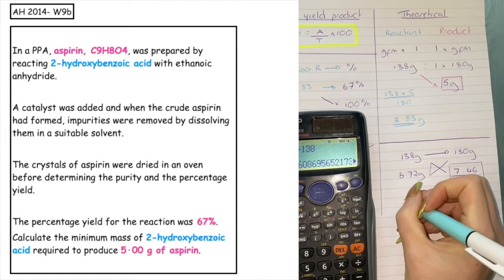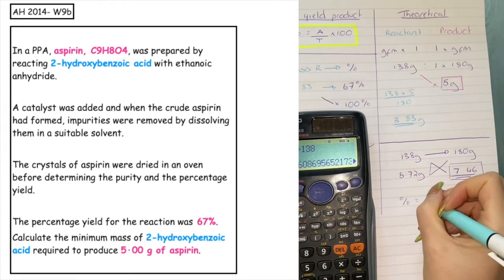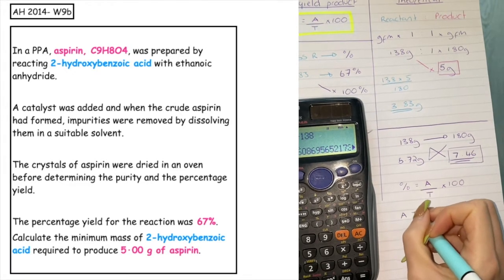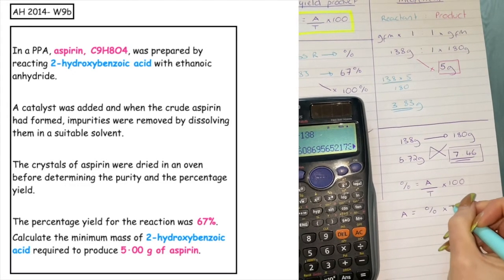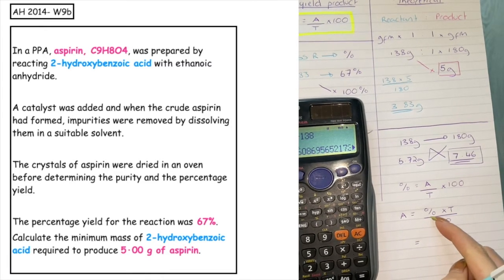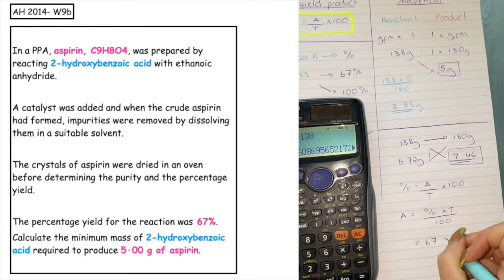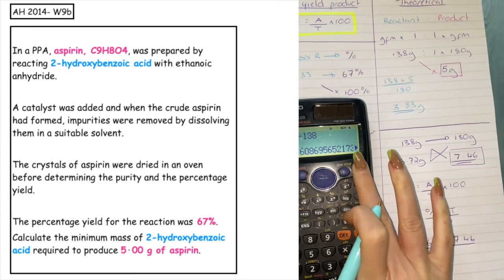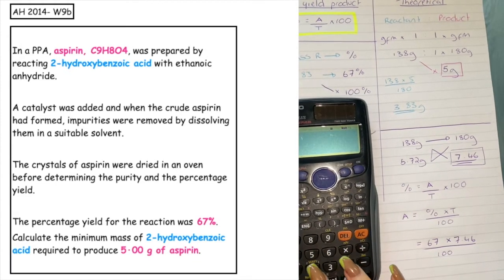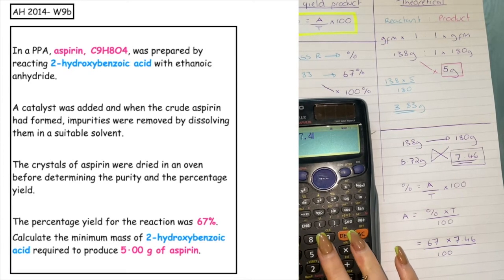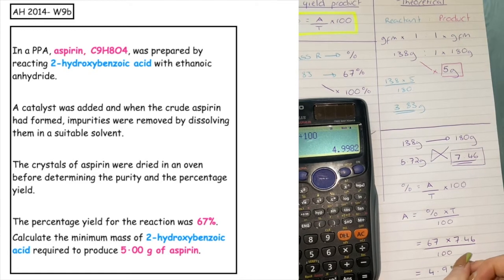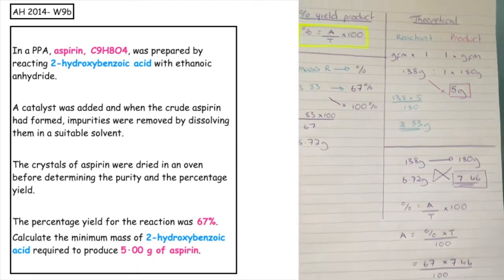Substituting into the calculation: percentage yield equals actual over theoretical times 100. Rearranging for actual: A equals percentage times T divided by 100. The percentage given was 67%, and the theoretical we worked out is 7.46. So 67 times 7.46 divided by 100 gives a final mass of 4.99 grams, which equals 5 grams of product. This proves that the calculation is correct.